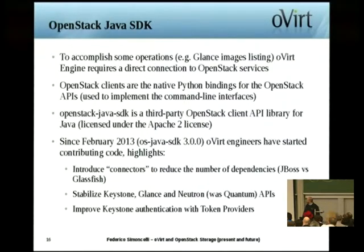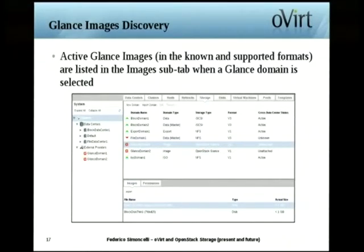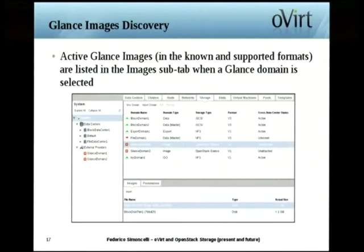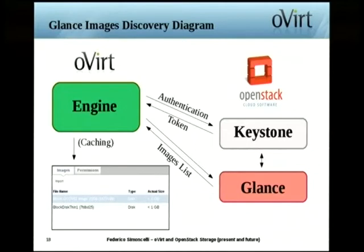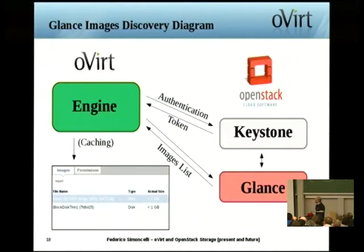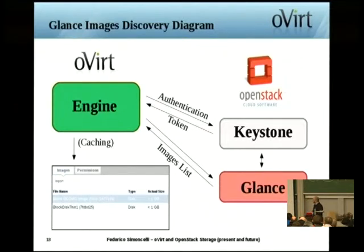Let's dive into one of the operations we were interested in — Glance image discovery. We want to list the images provided by the Glance service. When you select the Glance storage domain in the UI, you will have a list of images available on that Glance domain. Behind the scenes, the oVirt engine goes to Keystone to request authentication, gets a token, then goes to the Glance external provider you defined earlier to get the image list. There's some caching involved, and then the list is displayed in the UI.